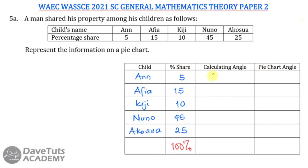To get the corresponding angle aligning with each percentage share, we need to calculate that angle. For each child, we take their particular share over the total — which is 100 — multiplied by 360. That 360 is reflective of the angle that the share will represent on the pie chart. It is a fraction of the percentage multiplied by the total number of degrees on a pie chart.